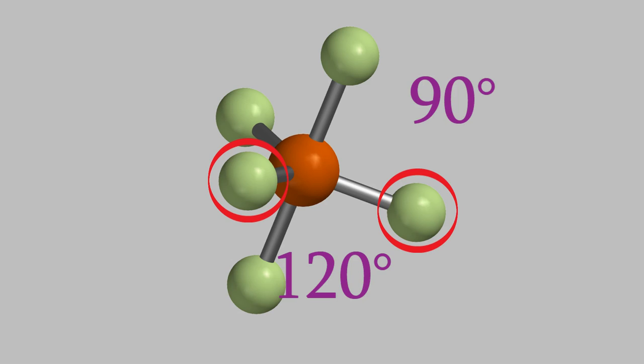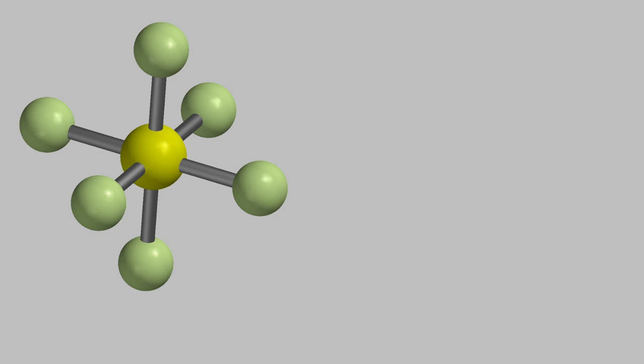We'll look at one more shape now, the one where there are six bonds on the central atom, as in sulfur hexafluoride. This is called an octahedral shape, and as you can see, the angle between each of the adjacent bonds is just 90 degrees.